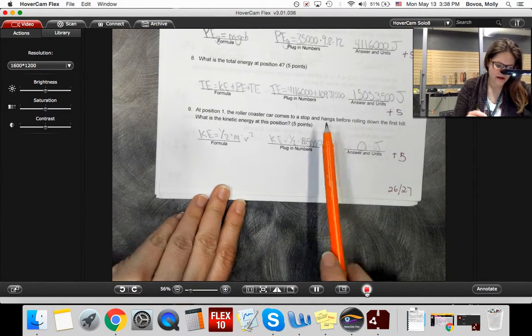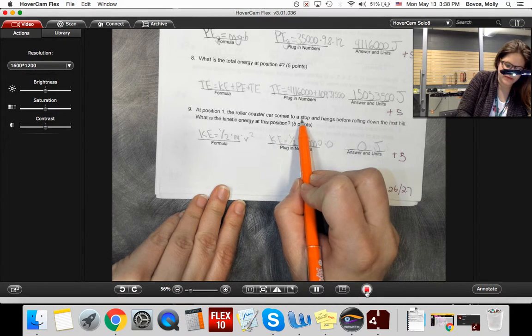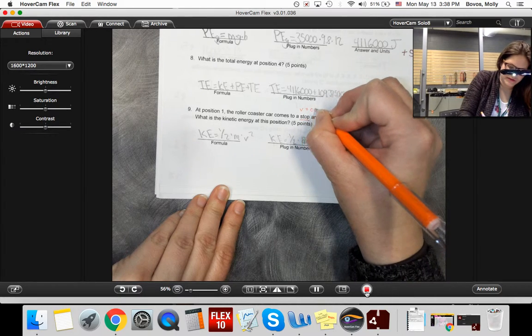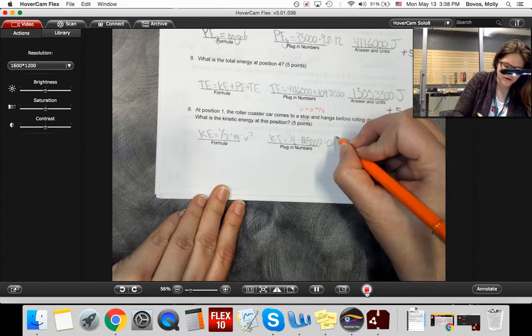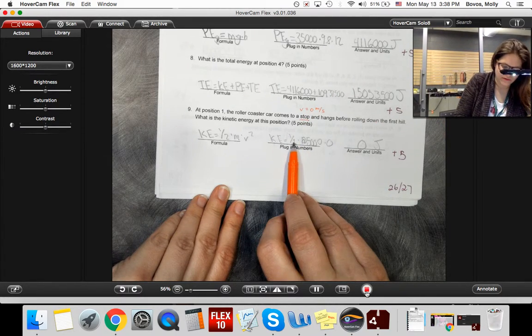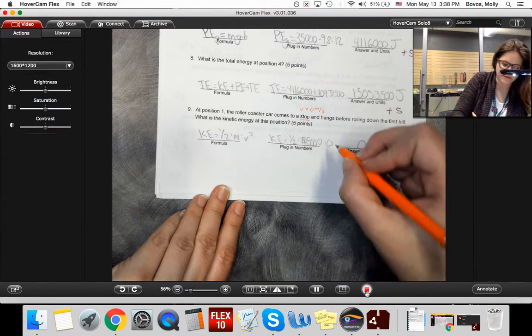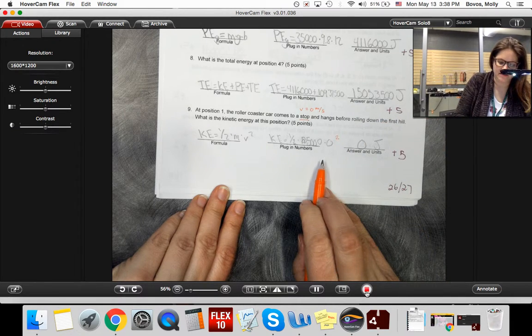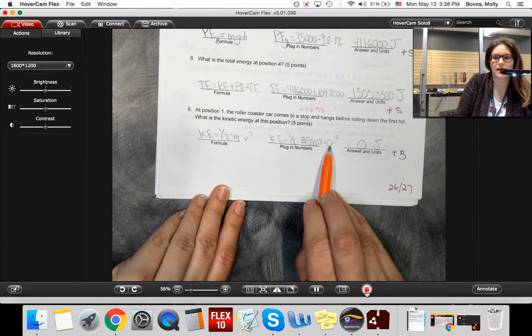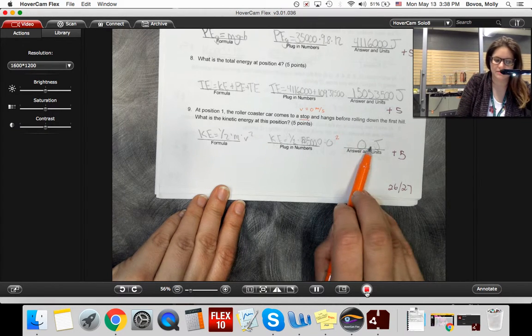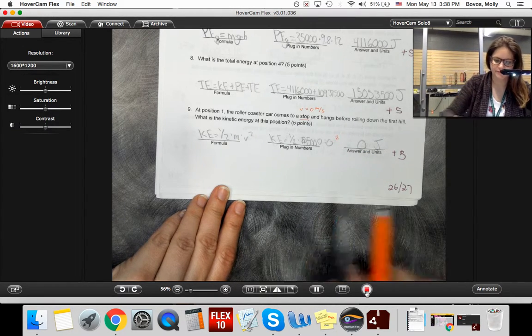Last, when the roller coaster comes to a stop, what that means is the velocity of the roller coaster is zero. So we would have KE equals 1/2 times the 35,000 kilograms times 0 meters per second squared. Anything times 0, even if the 0 is squared, is going to be 0. So that would just be 0 joules here. Thank you. I'll see you next time.